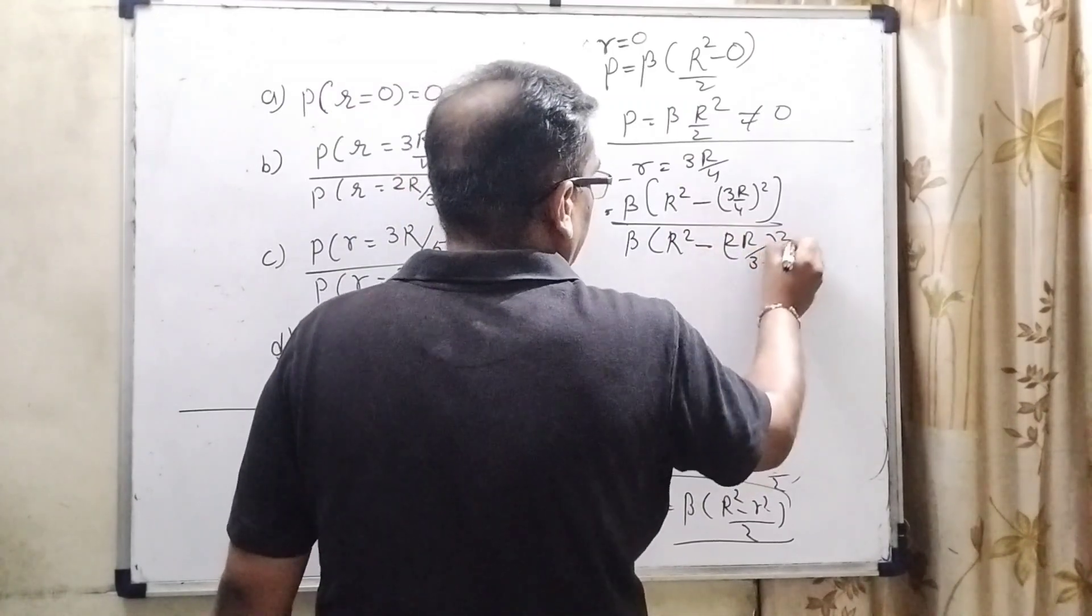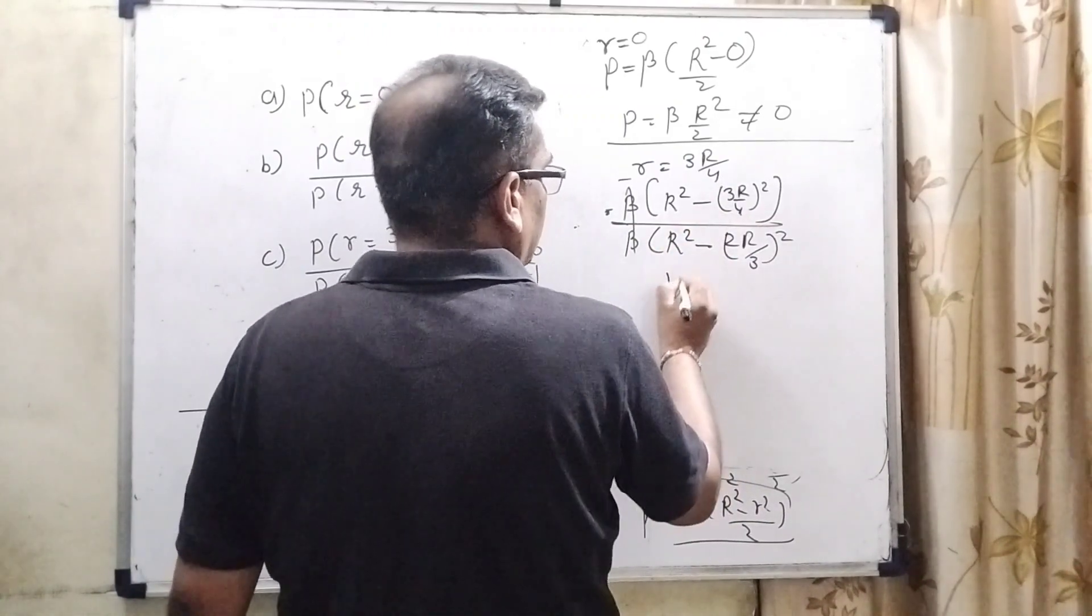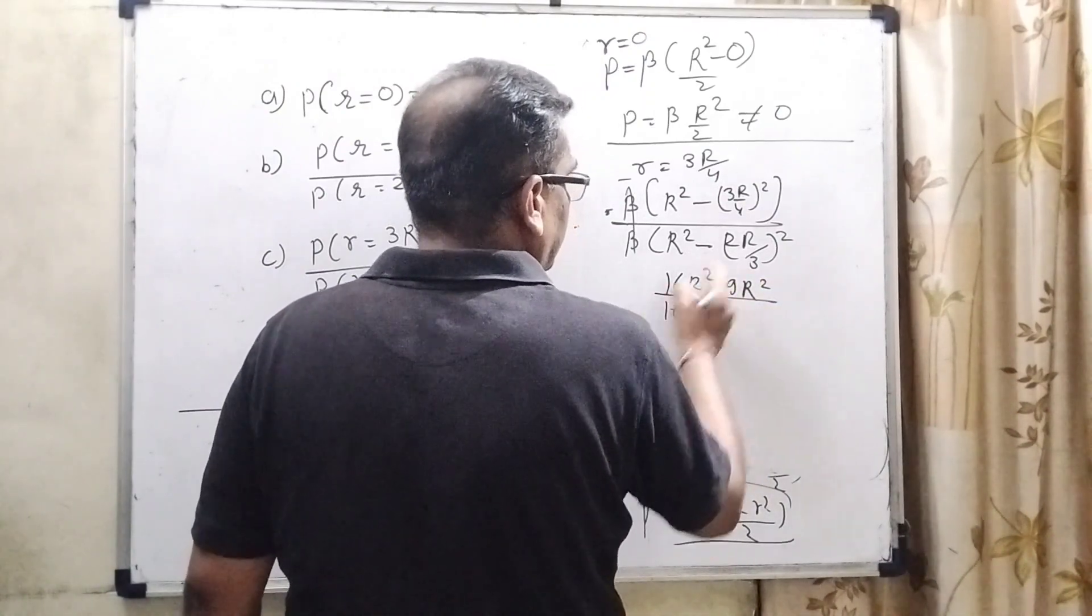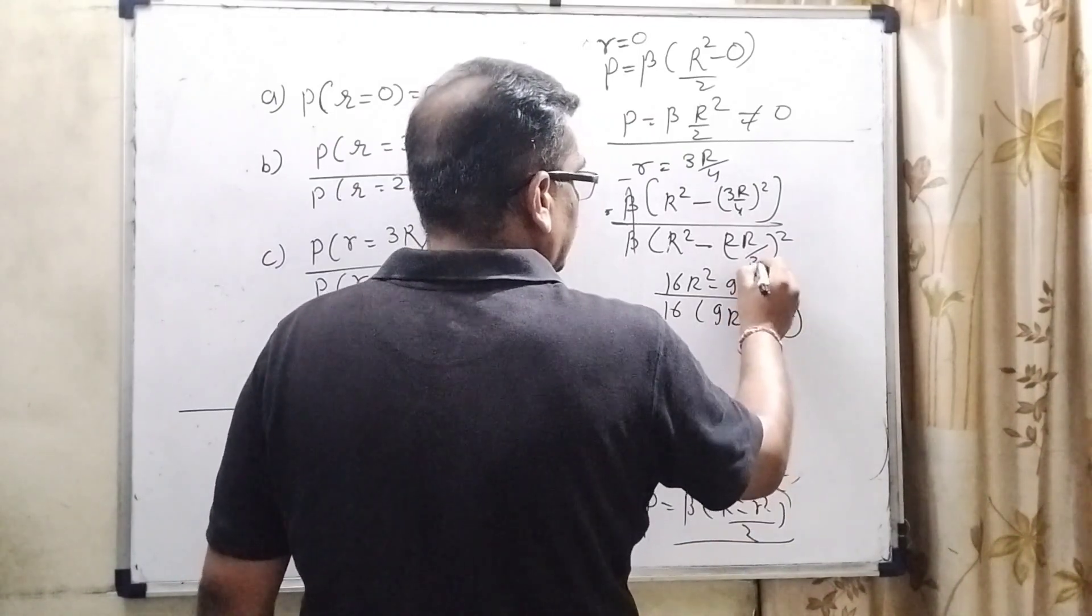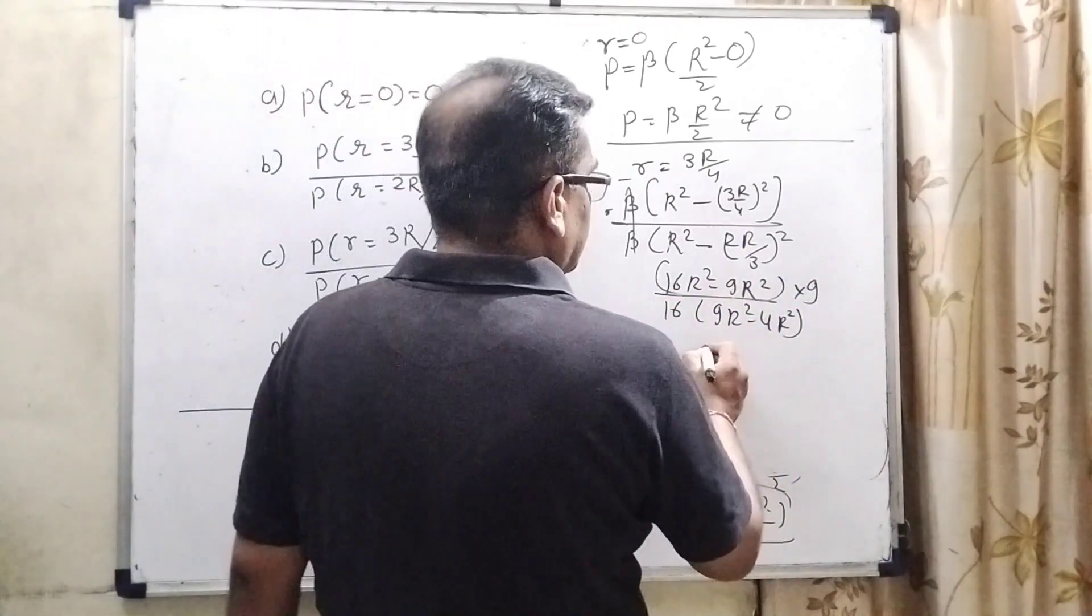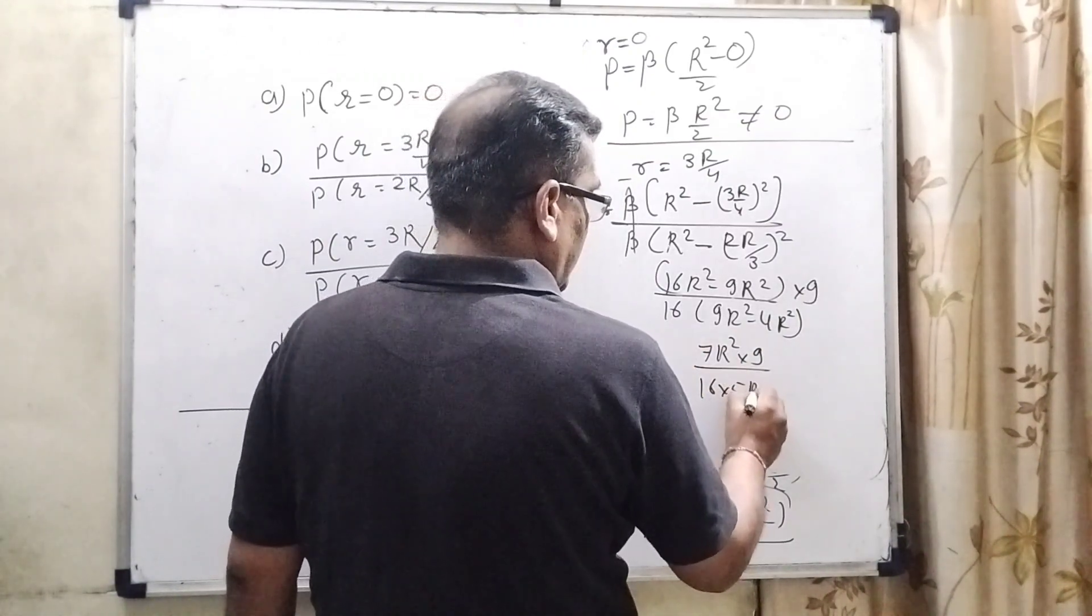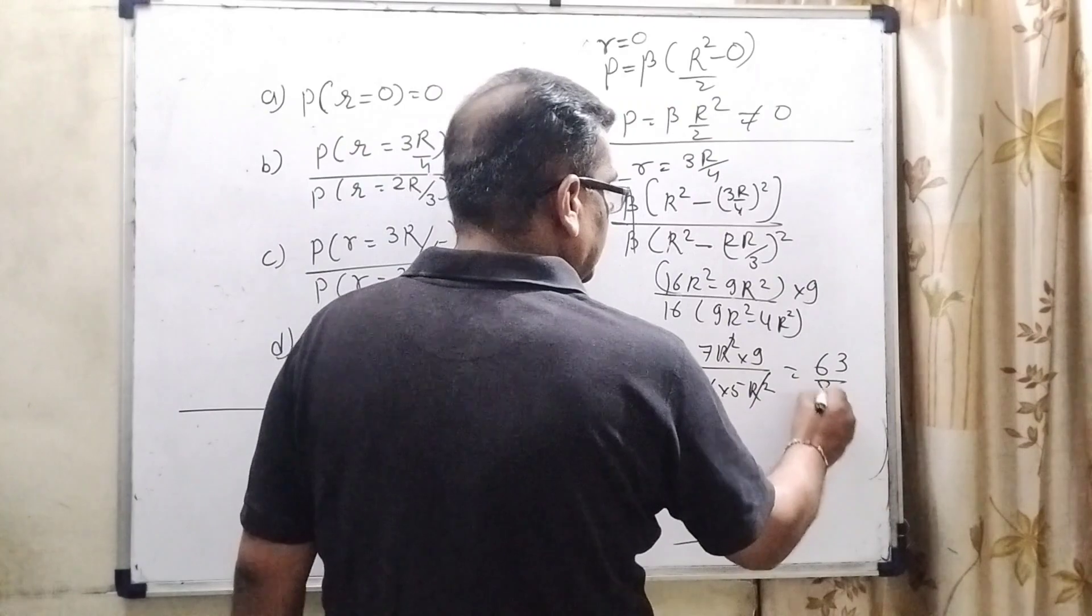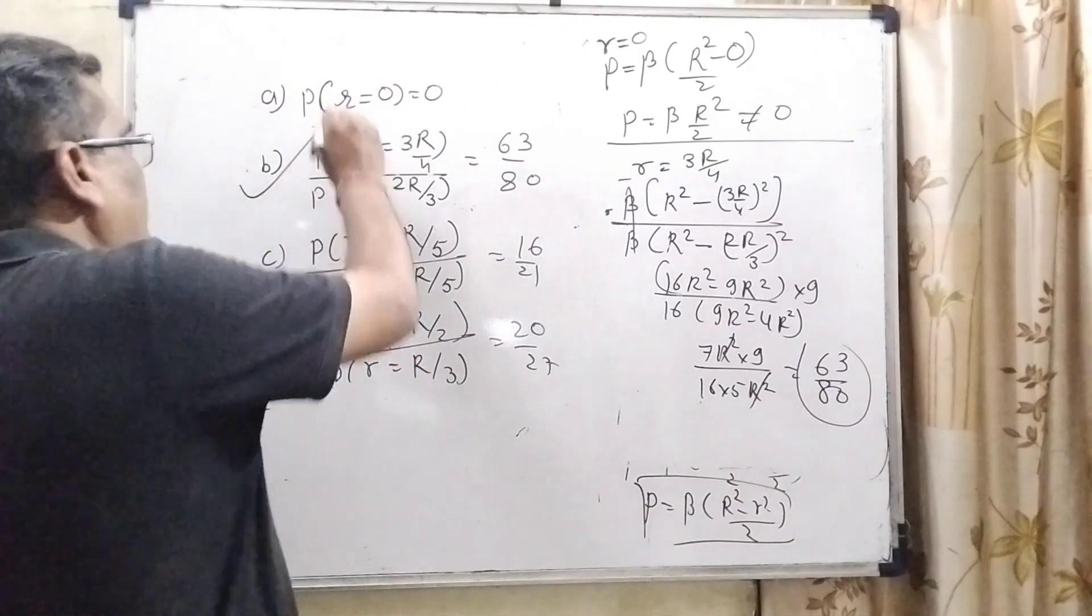By solving this value, 16 R square minus 9 R square minus 4 R square and this 9 goes to the numerator. Now how much here? 7 r square into 9, and here 16 into 5 r square. R square cancels out. 9 times 7 is 63 and this is 16 into 5, 80. 63 by 80. Yes, here B option is correct.